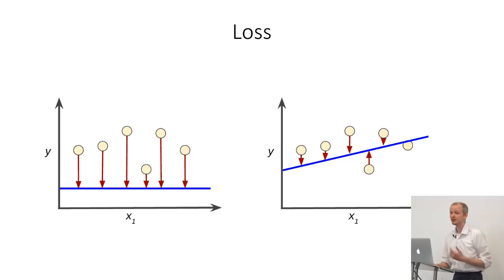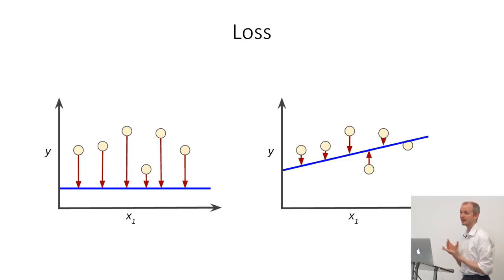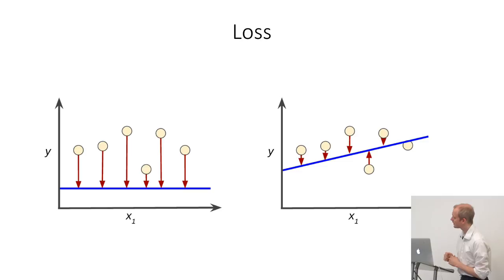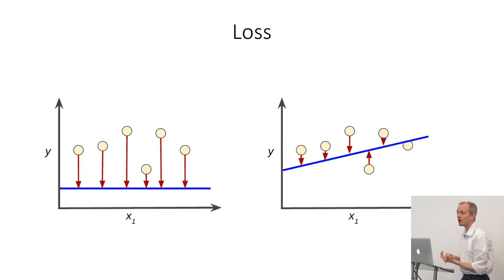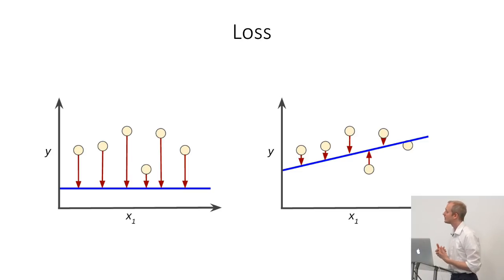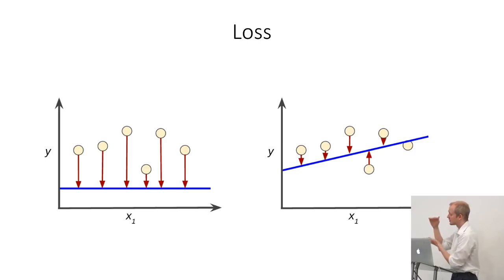Loss — the thing I mentioned — is the amount that your model is predicting incorrectly. In these two examples: on the left, if the model predicted a horizontal line, the distance between the actual outcomes and the predictions the model made is quite big, so the loss would be quite high. On the right, you see a better model — one that fits the data a lot better — and the loss is lower because the distance between the actual points and the predictions is smaller. In models you're trying to minimize loss.